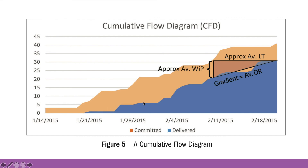Continuously monitoring the approximate values for the average work in progress and the average lead time leads us to the ratio of the average delivery rate. This leads to a possible and desired outcome that represents a continuous growth of the orange area and a continuous throughput throughout the project's lifetime.